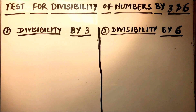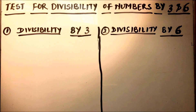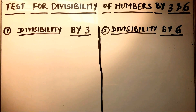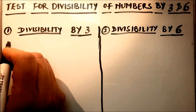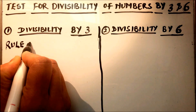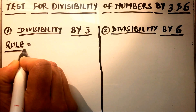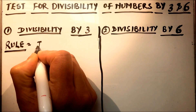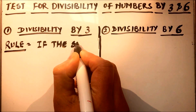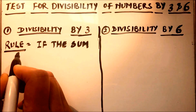Hello viewers, today we are going to learn the test for divisibility of numbers by 3 and 6. First, we learn the divisibility rule for number 3 — whether the number is divisible by 3 or not. The rule for divisibility by 3 is: a number is divisible by 3 only if the sum of its digits is divisible by 3.